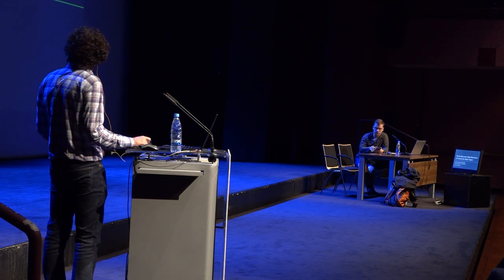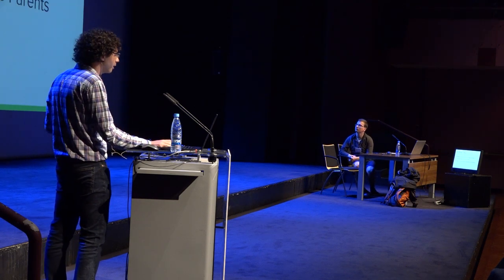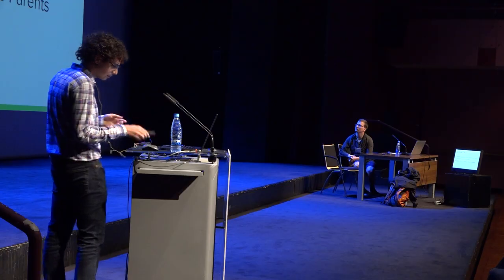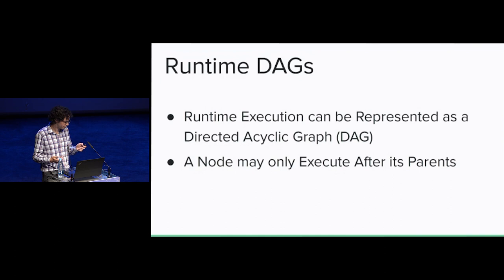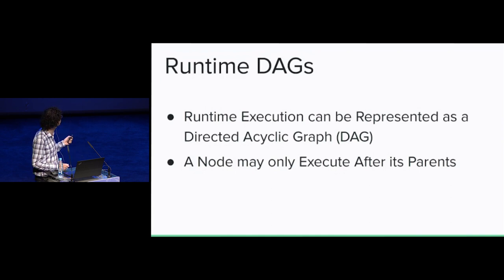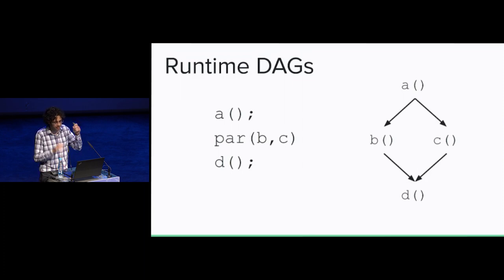My name is Francis Rivaldi. I work under Stefan Muller. As many of you may know, programs when they execute can be represented as a runtime DAG in their execution path, where a node may only execute after its parents have executed. For some simple examples: here's some sequential code doing A, then B, then C. Here it does A, then B and C in parallel, then D. If you look at the graph, you can see it does A, then it can go to either B or C, or both at the same time, and then goes to D.